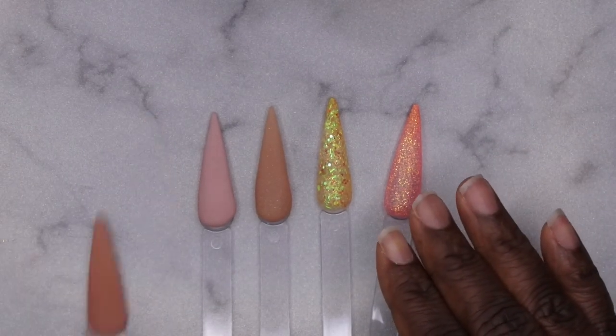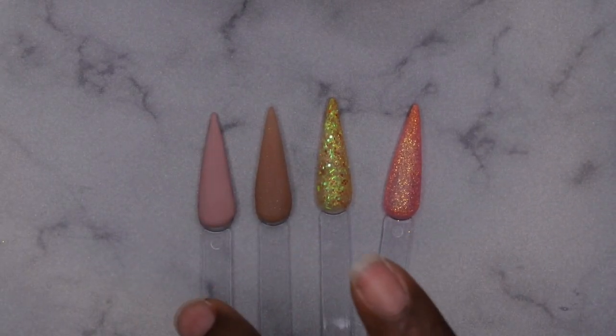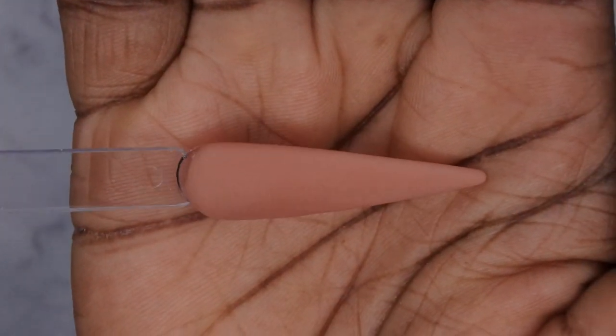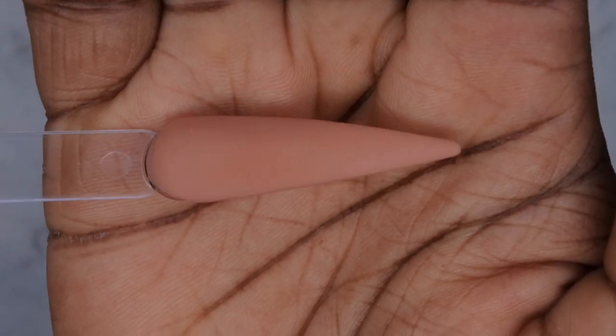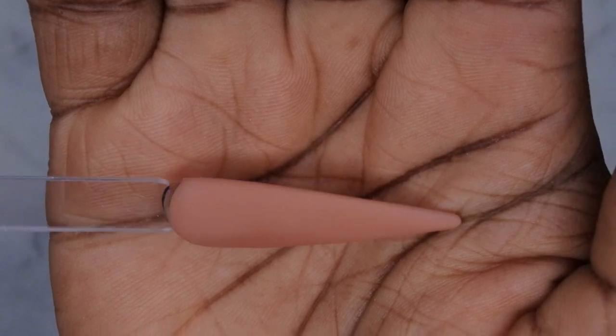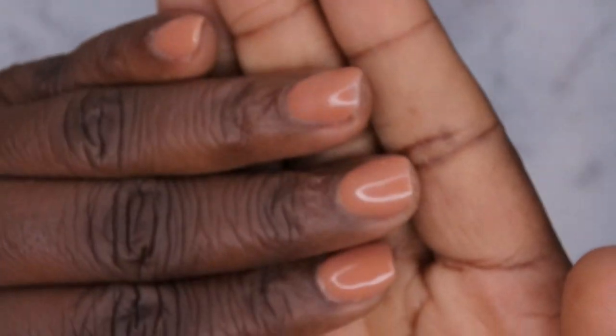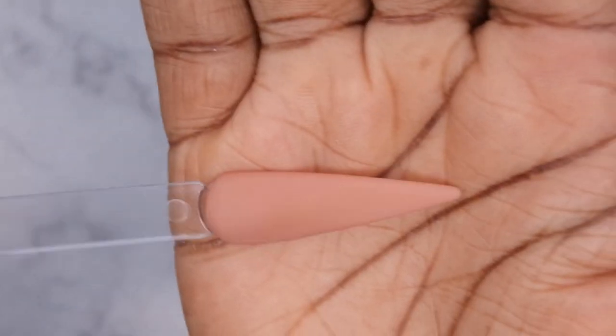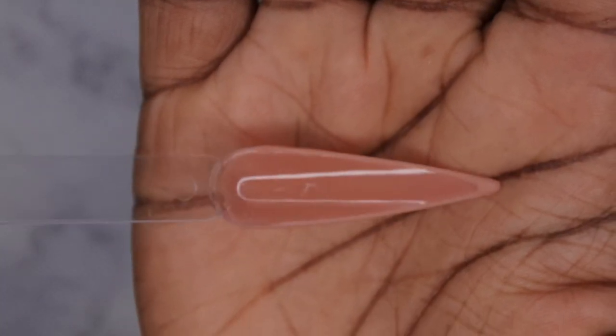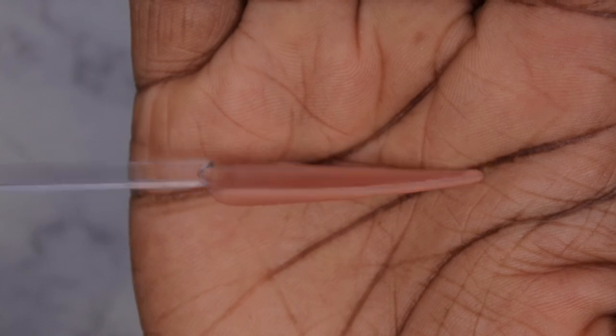Alrighty, so this is what all the acrylics look like after they've been swatched. This here is the Touch of Lips by Not Polished. It's a really beautiful nude. It's kind of like a deeper brown color here. And this is what it would actually look like on the nails. So that's really pretty. The only thing I didn't like about this one is that it did marble a little bit. But this is what it would look like top coated.